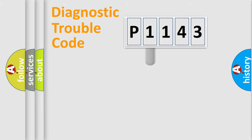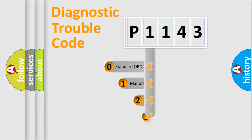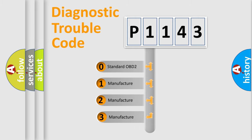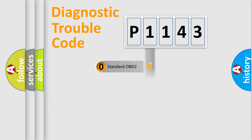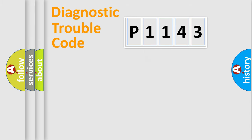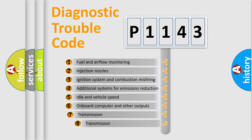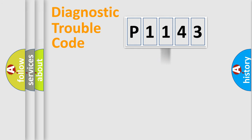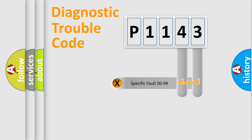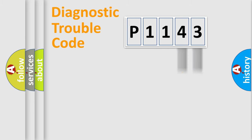This distribution is defined in the first character of the code. If the second character is expressed as zero, it is a standardized error. In the case of numbers 1, 2, or 3, it is a more specific expression of a car-specific error. The third character specifies a subset of errors. This distribution is valid only for the standardized DTC code. Only the last two characters define the specific fault of the group.